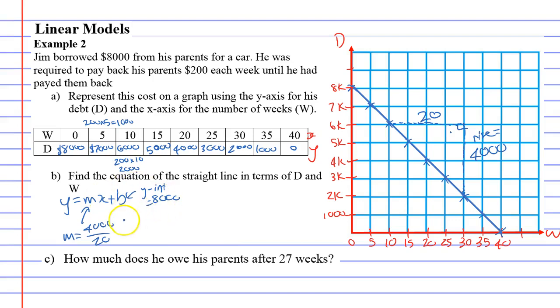So our gradient m is rise over run or 4,000 over 20, which comes out to 200. So gradient's 200. Alright. So we're going to rewrite our formula. And instead of m, it's 200x. And instead of b, it's 8,000. Okay. So that's our formula in terms of y and x. But they want it in terms of D and W. Since D stands for y, it's going to be D equals. And W stands for x. We're going to write 200W plus 8,000. That is our equation now.